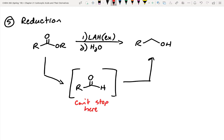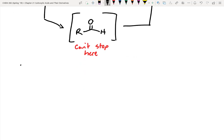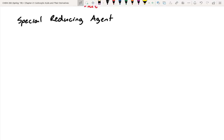Chemists don't like being told they can't do something. A good approach to stop at the aldehyde would be a bulky hydride source. Unfortunately, we can't use the same bulky hydride source we saw with acid halides and anhydrides — that's too bulky to react with an ester. So instead, they did more screening and found a hydride source that works well — it's slightly less bulky.